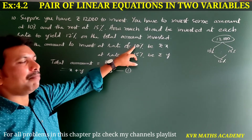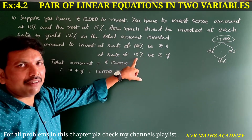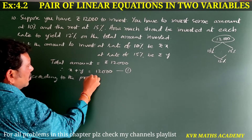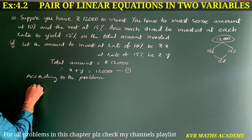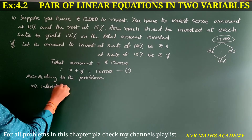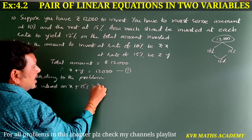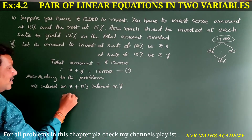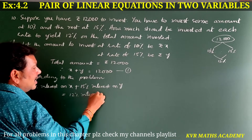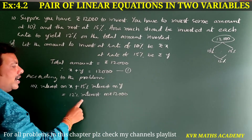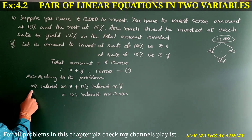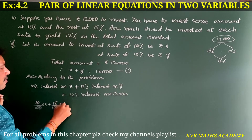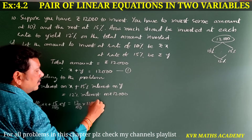By the problem, 10% interest on X plus 15% interest on Y should equal 12% interest on rupees 12,000. That is: 10 by 100 into X plus 15 by 100 into Y equals 12 by 100 into 12,000. We should get 12% on the total amount.